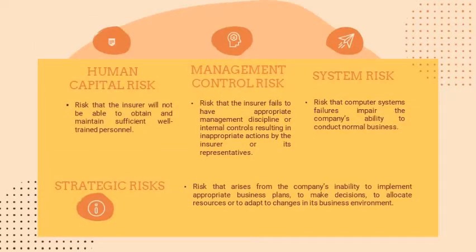More frequent operational risk events, which tend to be smaller, can be significantly mitigated or exacerbated by the quality of internal controls and guidelines. Examples of operational risk: firstly, human capital risk — risk that the insurer will not be able to obtain and maintain sufficient well-trained personnel; secondly, management control risk — risk that the insurer fails to have appropriate management discipline or internal controls, resulting in inappropriate actions by the insurer or its representatives; thirdly, system risk — risk that computer systems failures impair the company's ability to conduct normal business.